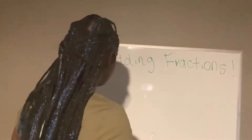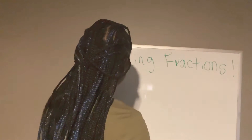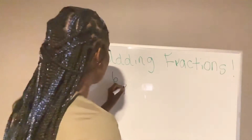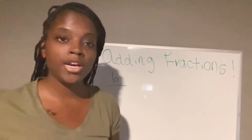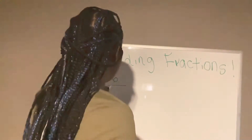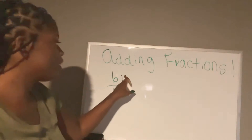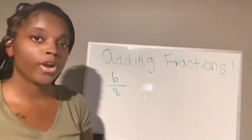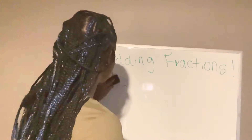So when I refer to something as the numerator, I'm talking about this — six — numerator. Fraction bar right here. And I say fraction bar because sometimes you have to divide a fraction. Numerator, fraction bar, denominator. Six over eight.